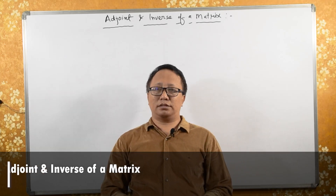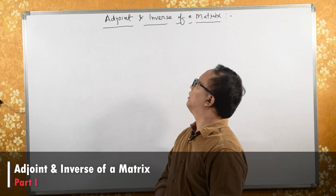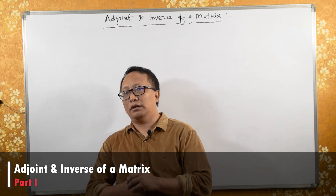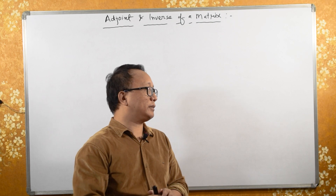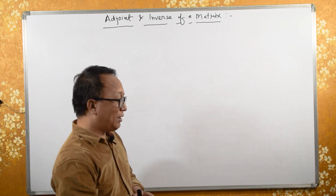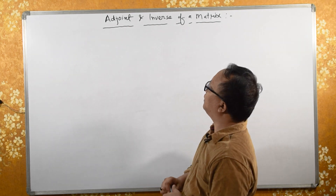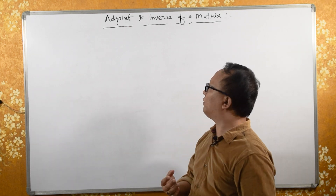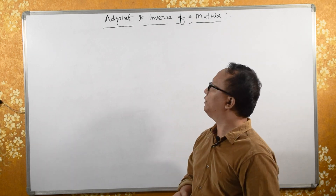Welcome to this section of the course. Today I will be speaking about adjoint and inverse of a matrix. These are some properties of a matrix. In order to find the inverse of a matrix, we need to know what is cofactor, what is minor, and what is adjoint.